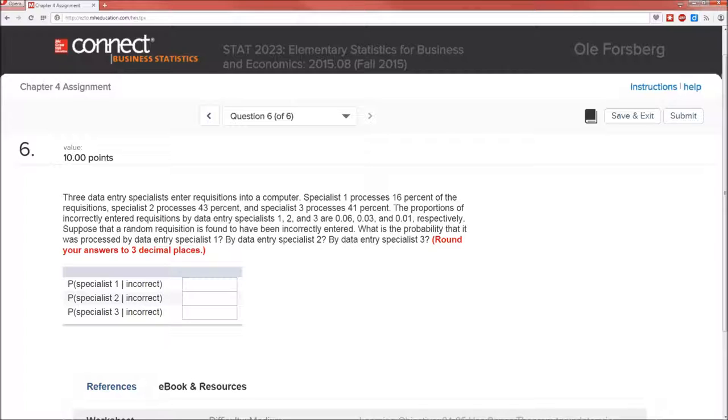Look at the information we're given here. We're given three data entry specialists. We'll call them specialist 1, specialist 2, and specialist 3. They enter requisitions into a computer. Specialist 1 processes 16% of the requisitions. Specialist 2, 43%, and specialist 3, 41%. Notice those three numbers, 16%, 43%, and 41%, add up to one. So there's only the three specialists.